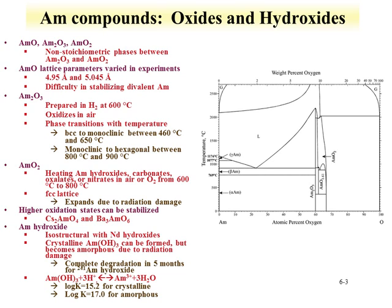Other important americium compounds for the nuclear fuel cycle include oxides and hydroxides. Three oxides have been examined: the monoxide, Am2O3, and americium dioxide. There is difficulty in forming the monoxide because of the instability of divalent americium. The Am2O3, the trivalent americium, can be prepared under reducing conditions at 600 degrees, and at higher temperature it oxidizes in air. There are phase transitions going from body-centered cubic to monoclinic between around 460 to 650 degrees, and monoclinic to hexagonal between 800 and 900 degrees C.